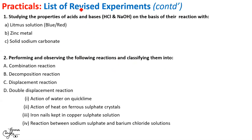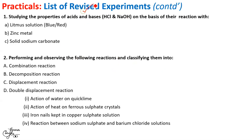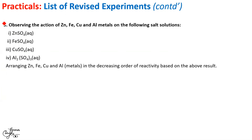The final revised list of experiments is as follows. You have a total of three experiments: first, studying the properties of acids and bases; second, the experiment based on various chemical reactions; and third, the experiment based on the reactivity series.